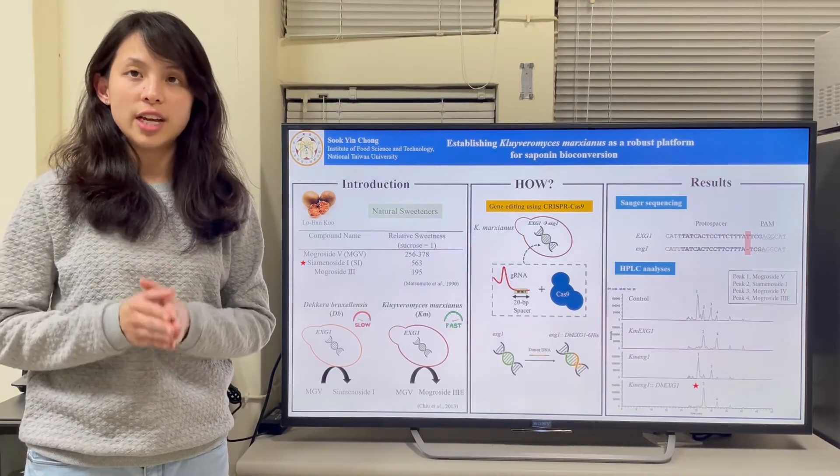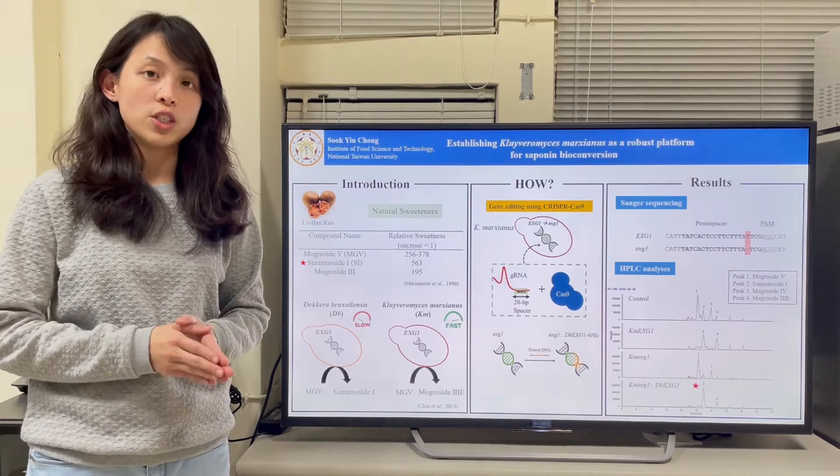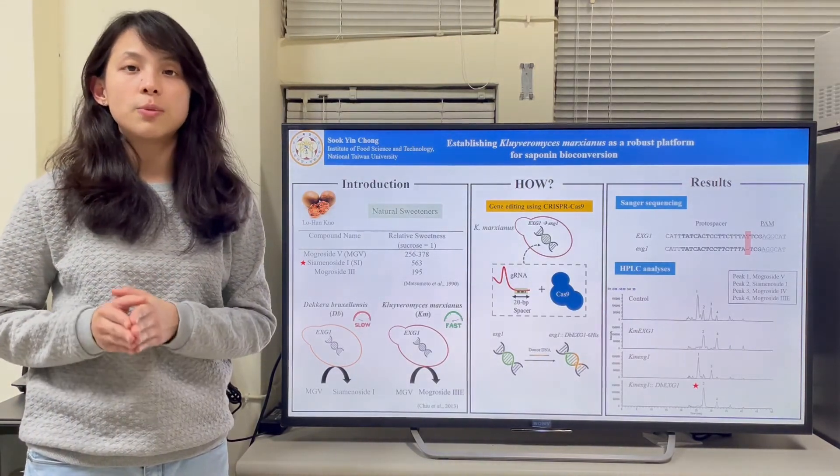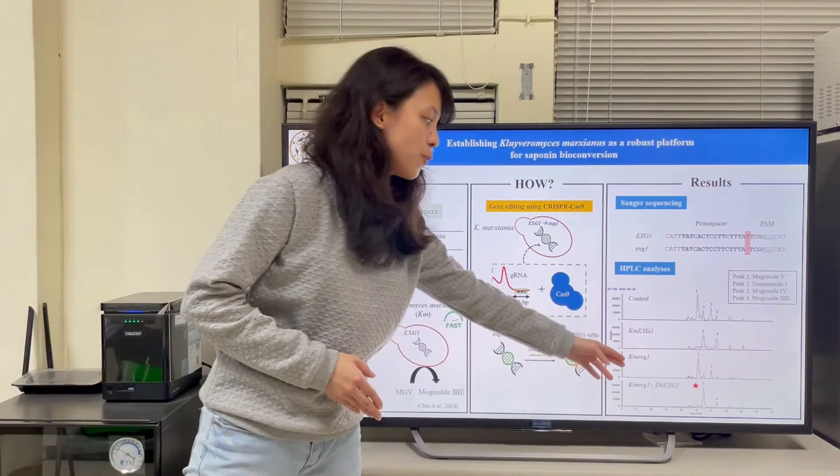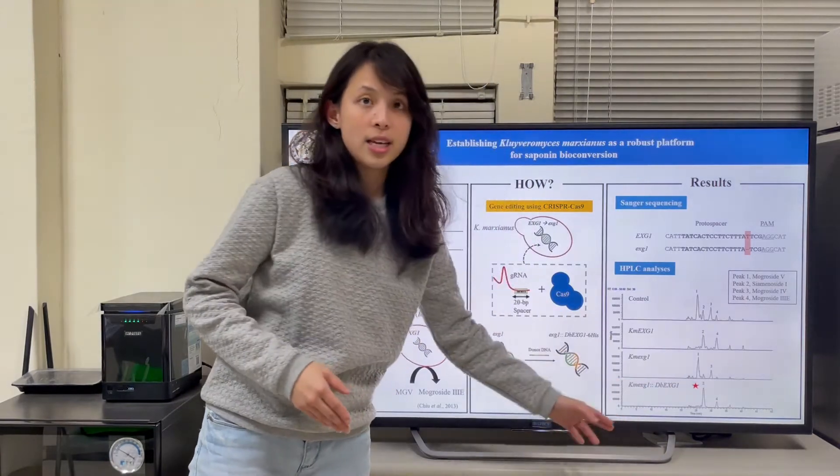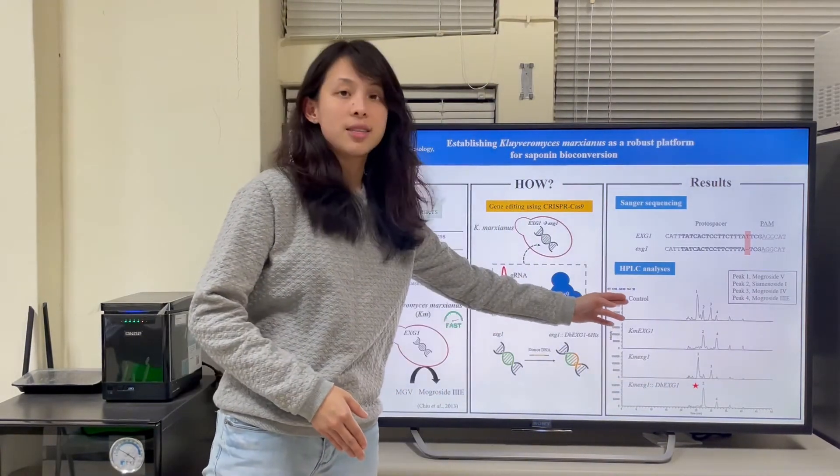We further analyzed this genetically modified KM with Luo Han Guo extract for mogulcide bioconversion using HPLC-MSMS. The profile of genetically modified KM is very different from the normal KM. With peak EXG1, mogulcide 5 remained the tallest, and this profile is similar to the control group with no yeast inoculated.